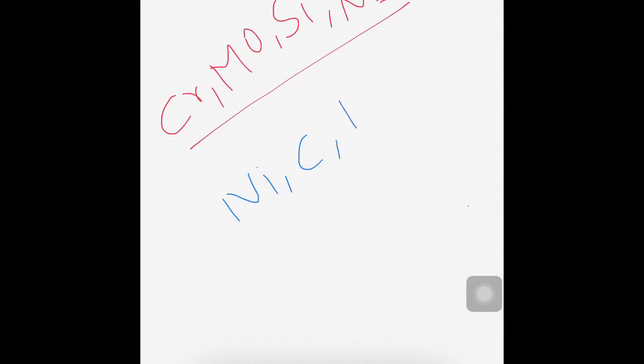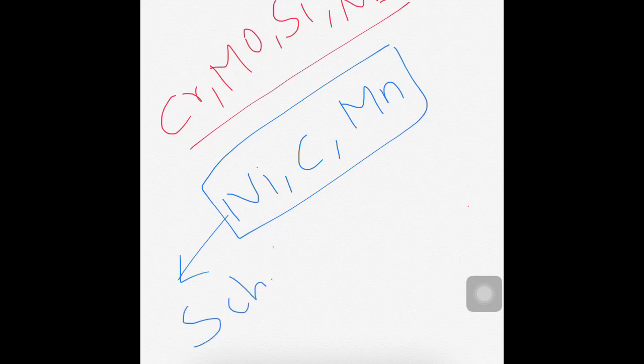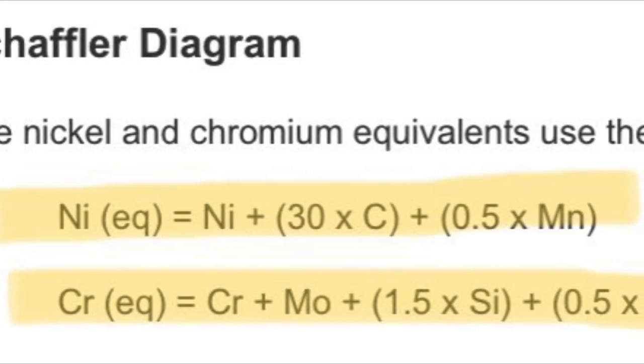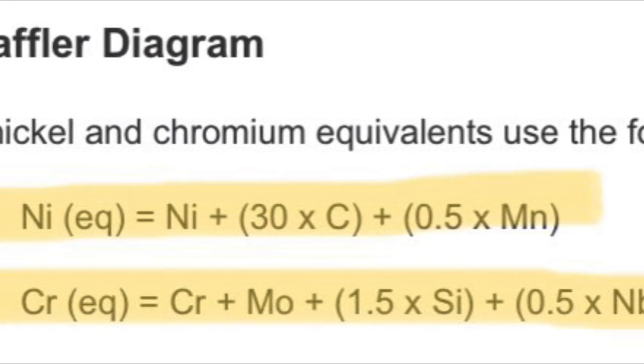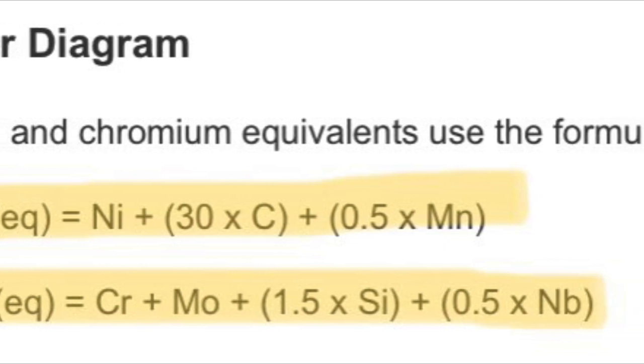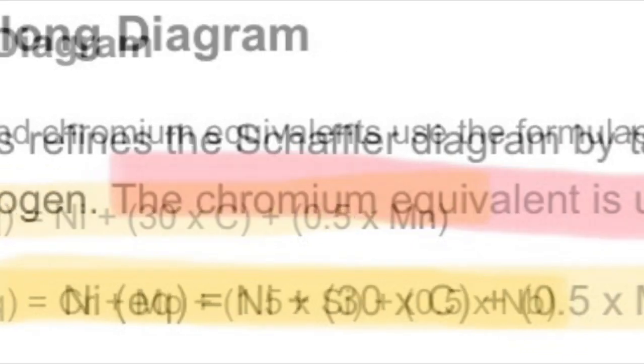For nickel equivalent value, nickel, carbon, and manganese, these percentage of elements are required for Schaeffler Diagram only. For DeLong Diagram, we have to add nitrogen percentage in only nickel equivalent. There will be no modification in chromium equivalent. These are all the formulas for calculating chromium and nickel equivalent for both Schaeffler as well as DeLong Diagram.